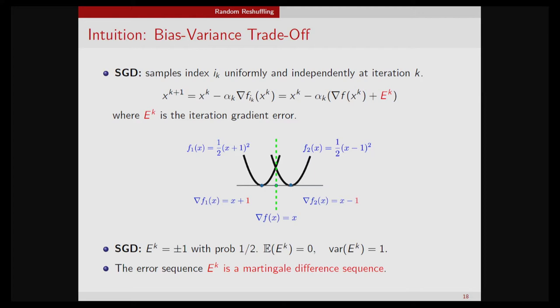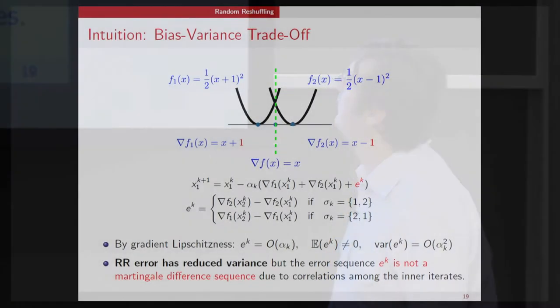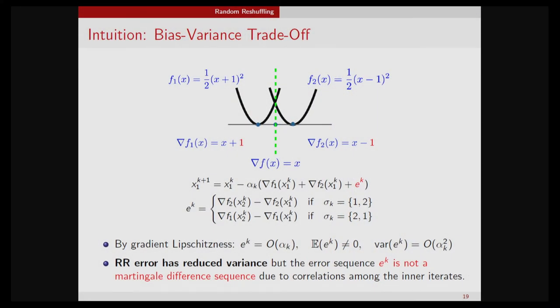This is related to variance reduction ideas from statistics. With stochastic gradient descent, your gradient errors are centered — they always have zero expectation, but variance fluctuates around a constant. For example with two functions, gradient errors behave like a Bernoulli variable plus or minus one, so the variance is on the order of a constant. That's what you have in stochastic gradient.